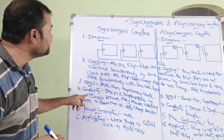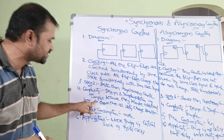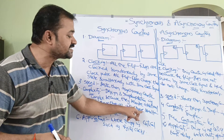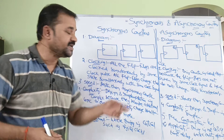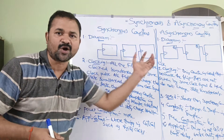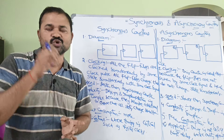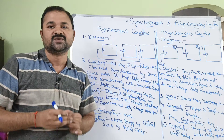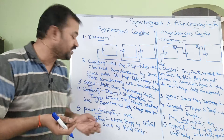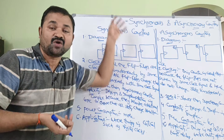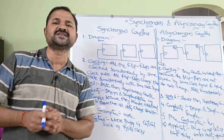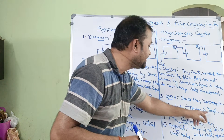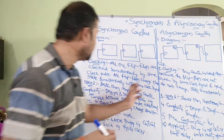The fourth difference is complexity. The design and implementation of a synchronous counter is complex because it requires additional logic to ensure that all the flip-flops change state simultaneously. Since the same clock pulse is applied to all flip-flops, we need extra hardware to ensure that synchronized logic, making synchronous counter design more complex compared to asynchronous counters.